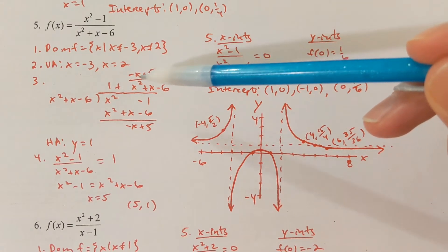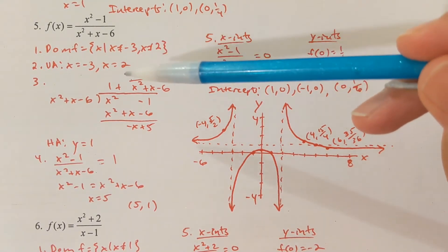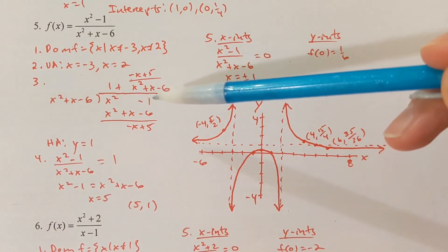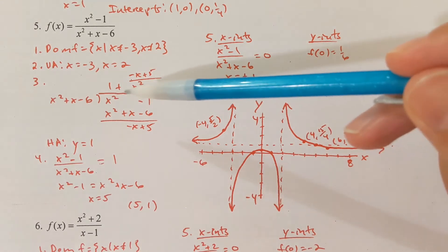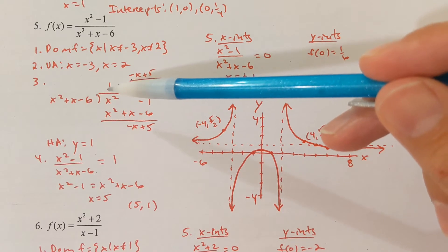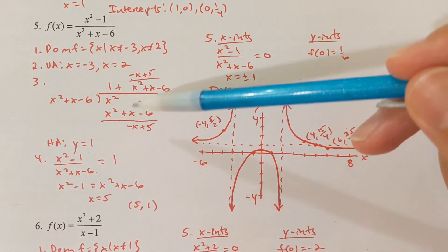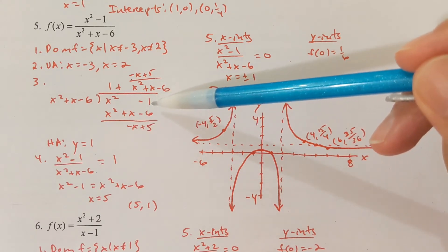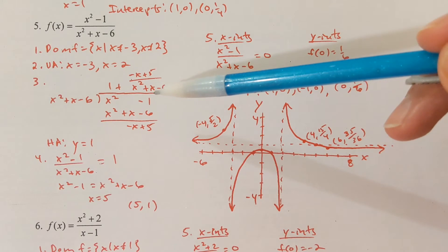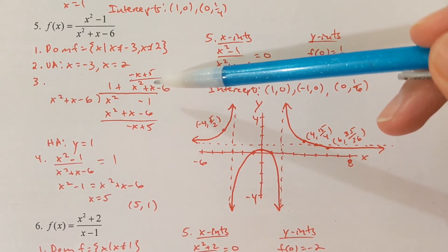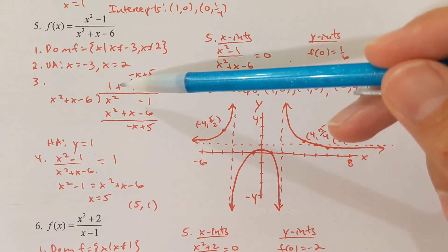For step 3, we divide x squared minus 1 by x squared plus x minus 6. Performing polynomial long division: 1 times x squared plus x minus 6 gives x squared plus x minus 6. Subtracting, x squared minus x squared is 0, 0 minus x is negative x, and negative 1 plus 6 is 5. The remainder is negative x plus 5 divided by x squared plus x minus 6, and the remainder is added to the quotient. We have a horizontal asymptote at y equals 1.